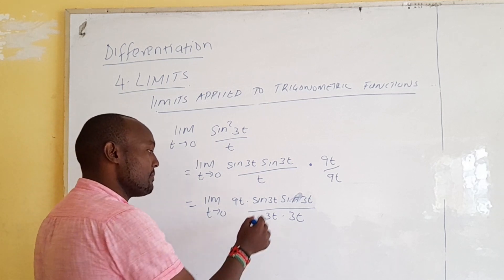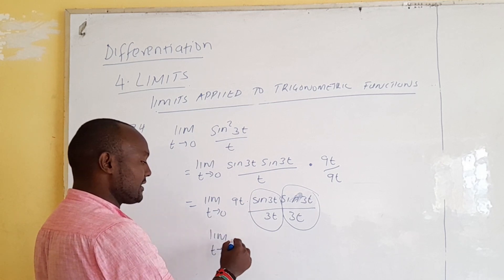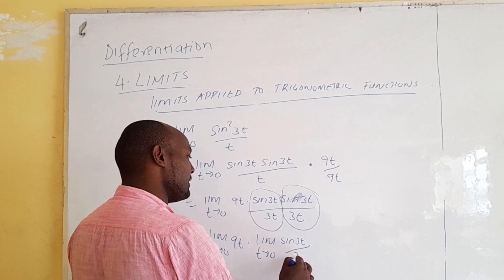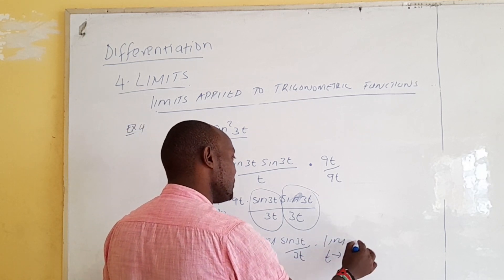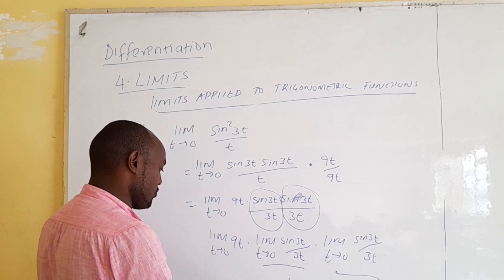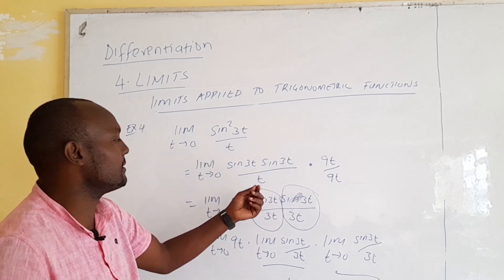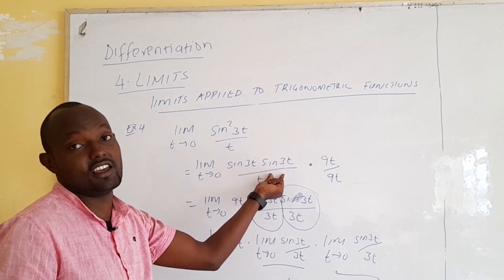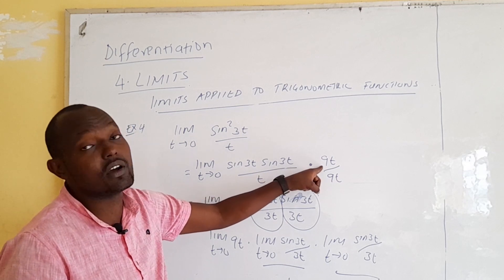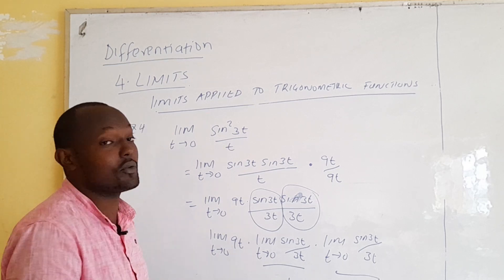After multiplying by 9/9, the expression becomes: the limit as t→0 of [9·sin(3t)·sin(3t)] / [9t²], which splits into the product of three limits: [9/9] × [sin(3t)/(3t)] × [sin(3t)/(3t)]. The first term is 0 (the remaining t factor), and each sin(3t)/(3t) limit equals 1, giving 0 × 1 × 1 = 0. That concludes the examples of limits applied in trigonometry.